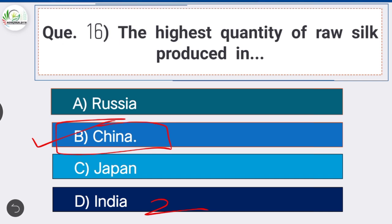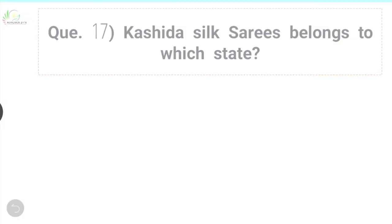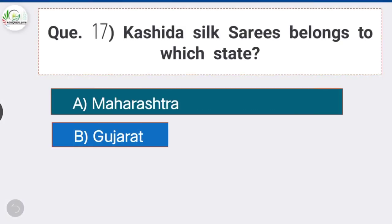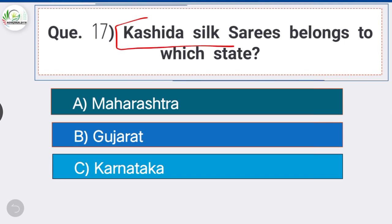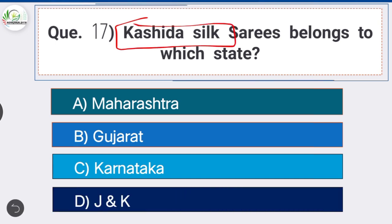Question number seventeen: Kashida silk saris belong to which state? Kashida silk belongs to Jammu and Kashmir. Similarly, Assam is well known for Muga silk, Karnataka for Mysore silk, and Maharashtra for Paithani silk.